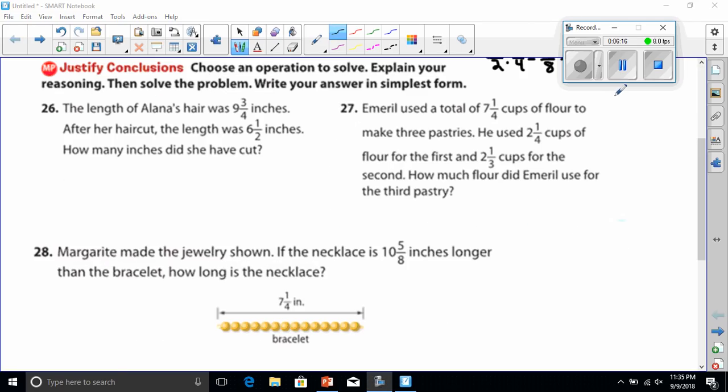Let's work on number 27. It says here Emeril uses a total of 7 and 1/4 cup of flour to make 3 pastries. He used 2 and 1/4 cup of flour for the first, and 2 and 1/3 cup for the second. How much flour did Emeril use for the third pastry? Well, let's work the first one first. This is really subtracting, right? We're going to subtract these two mixed numbers from 7 and 1/4.